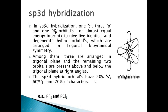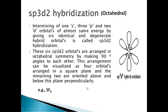In SP3D hybridization, the S character is 20%, P character is 60%, and D character is 20%. Examples include PF5 and PCl5. SP3D2 hybridization involves one S, three P, and two D orbitals — dz-squared and dx-squared minus y-squared — giving six identical and degenerate hybrid orbitals oriented in octahedral geometry with bond angles of 90 degrees. The example is SF6.